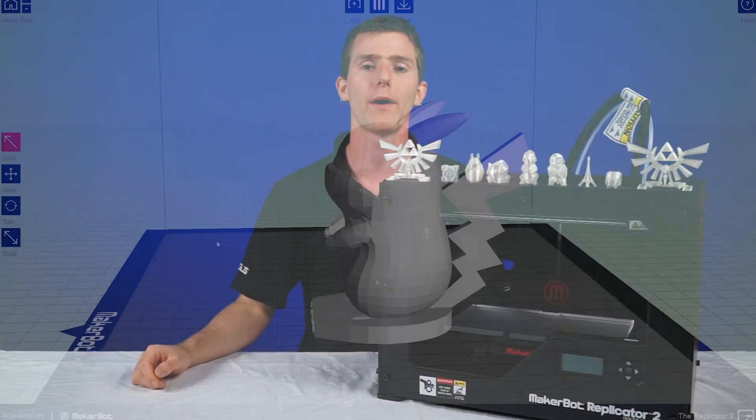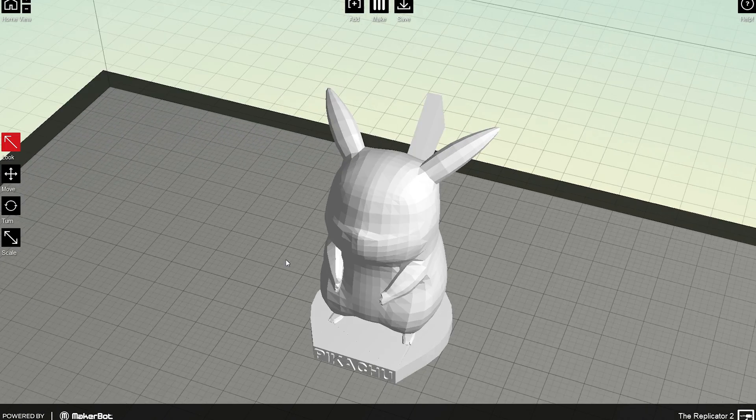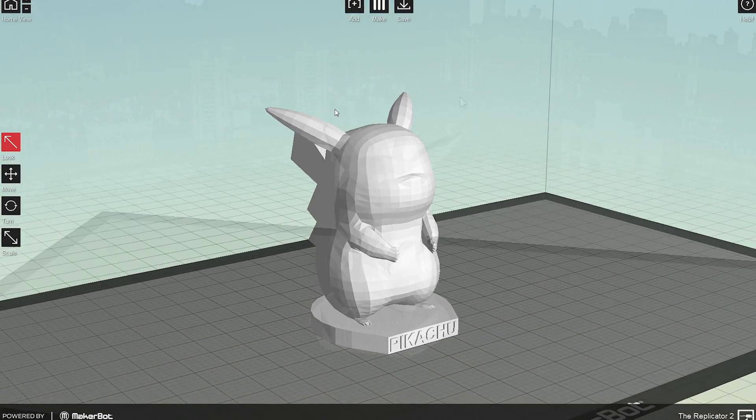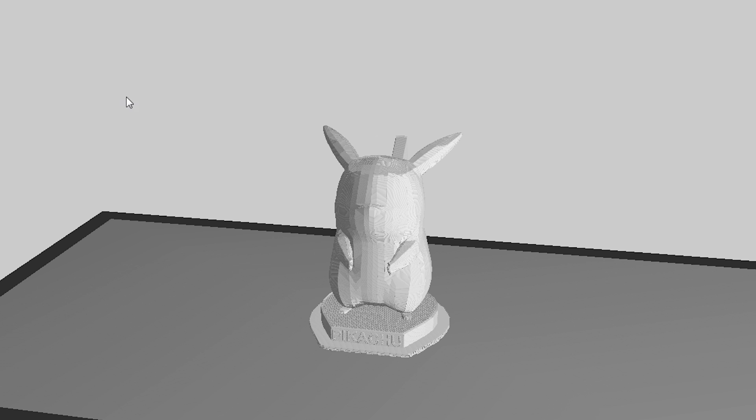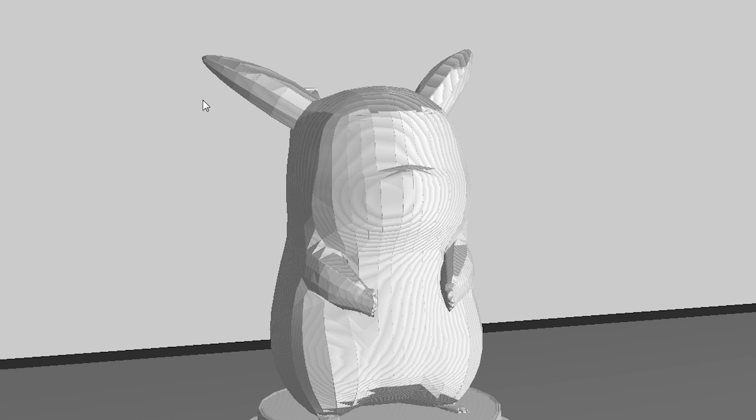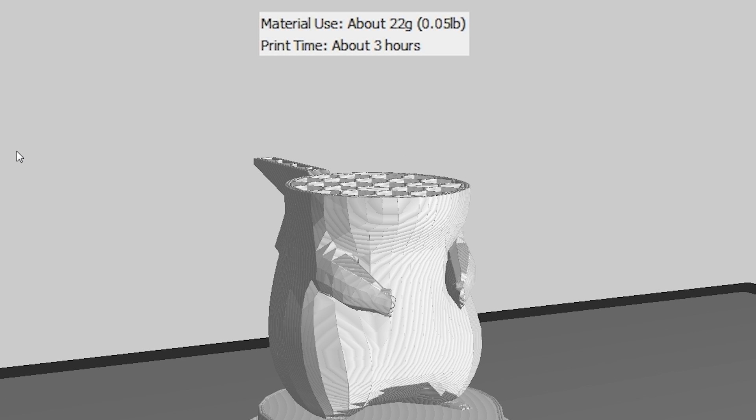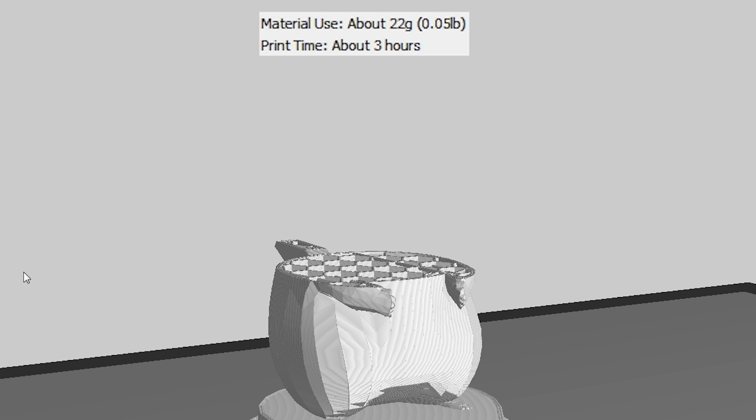As far as software goes, MakerBot recommends MakerWare. It is a fully featured 3D model instruction conversion software. It allows you to scale, adjust, and visualize your model before printing. 3D printing software will take a 3D model, break it down into vertical layers, and then calculate the path needed for the print nozzle to shape the object out. Depending on the complexity of your model and the resolution of your printer, builds can take anywhere from 5 minutes to days.